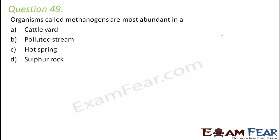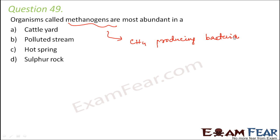Question number 49: Organisms called methanogens are most abundant in — (A) a cattle yard, (B) a polluted stream, (C) a hot spring, or (D) sulfur rock. Methanogens are methane-producing bacteria. We find them very abundantly in the rumen of cattle — the rumen is part of the digestive system of cattle — where they play a very important role in digestion. Therefore we see them most abundantly in the cattle yard.